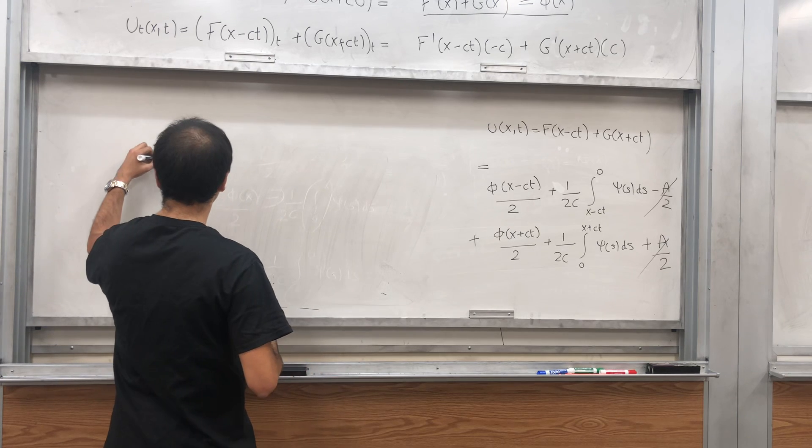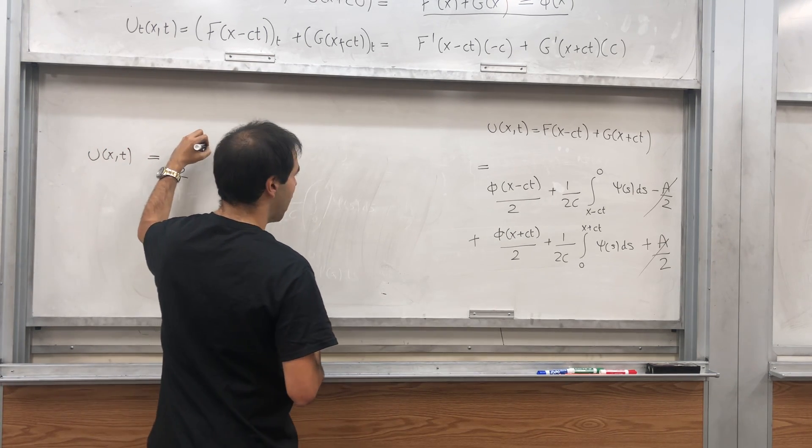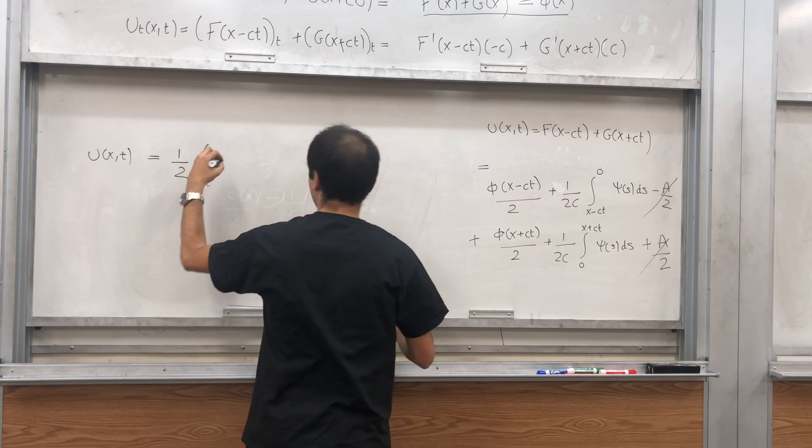Because what do you get? First of all, you have a one half. Again, this is U of x,t. It's one half of this phi term, phi of x minus ct.